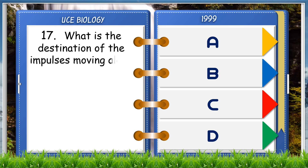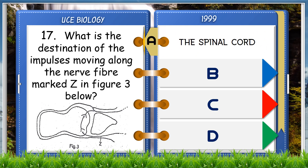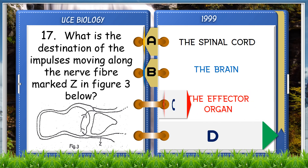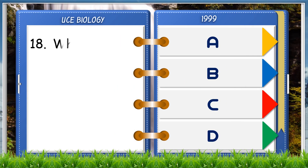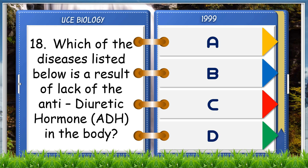What is the destination of the impulse moving along the nerve fiber marked Z in figure three below? A. The spinal cord, B. The brain, C. The effector organ, D. The receptor organ. The answer is C, the effector organ.